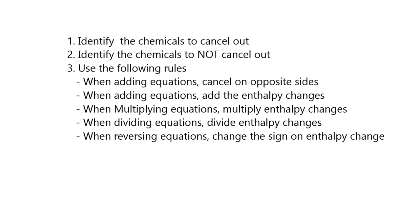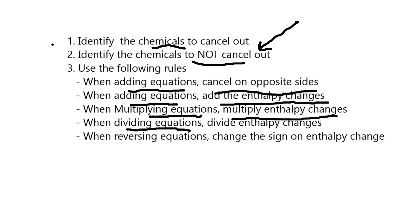And these are the three steps that I would boil everything down to. So the first thing is you want to identify the chemicals to cancel out. And in conjunction with that, identify the chemicals to not cancel out. Because that's really what you're ultimately looking for. Your final equation is going to be the chemicals that you don't want to cancel out. So looking for what you don't want to cancel out will kind of help to simplify things for you. Then use the following rules. So when you add equations, cancel on opposite sides. When adding equations, add the enthalpy changes as well. When you multiply equations, multiply the enthalpy changes. When you divide equations, divide the enthalpy changes. So whatever you do to the equation, whatever you do to the coefficients in your equation, you have to do that to your change in enthalpy as well, as far as multiplying and dividing go. Then lastly, when you reverse your equations around, you also have to change the sign on your enthalpy. So a positive becomes negative or a negative becomes positive.